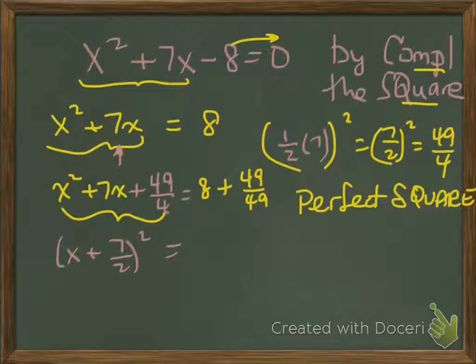Whoops, I made a slight mistake on the right-hand side of the equation. That should be 8 plus 49 over 4.